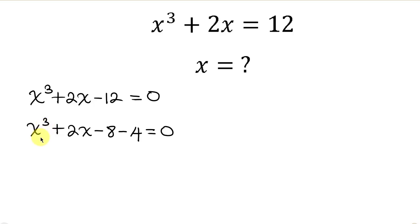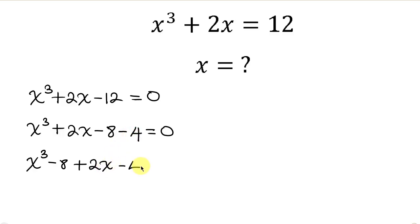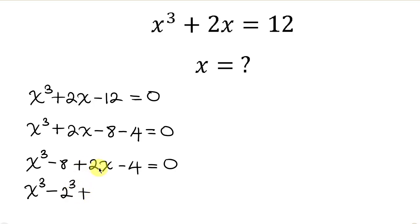Now let's pair the perfect cubes together. I'll take x cubed and minus 8, then plus 2x minus 4, equal to 0. This simplifies so that x cubed minus 8 can be written as x cubed minus 2 cubed, plus 2x minus 4, equal to 0.